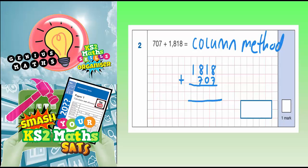So 8 plus 7, obviously start on the end column. 8 plus 7 is 15. Put the 5 in, carry the 1. 1 plus 0 plus the 1 you just carried is 2.